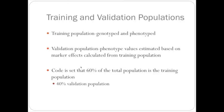while the validation population is what we're trying to predict. This is the phenotype values estimated based on the marker effects calculated from the training population. The validation population is only genotyped, but then we're estimating those phenotypes.